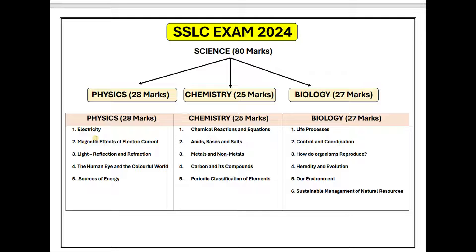In Physics, you have five units: Electricity, Magnetic Effects of Electric Current, Light Reflection and Refraction, The Human Eye and the Colorful World, and Sources of Energy. In Chemistry, you also have five units: Chemical Reactions and Equations, Acids Bases and Salts, Metals and Non-metals, Carbon and its Compounds, and Periodic Classification of Elements. In Biology, you have six units: Life Processes, Control and Coordination, How Do Organisms Reproduce, Heredity and Evolution, Our Environment, and Sustainable Management of Natural Resources.